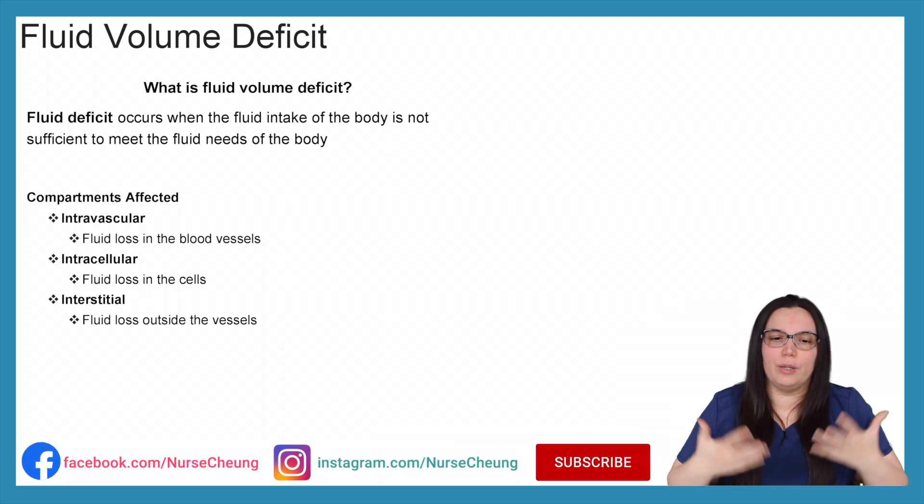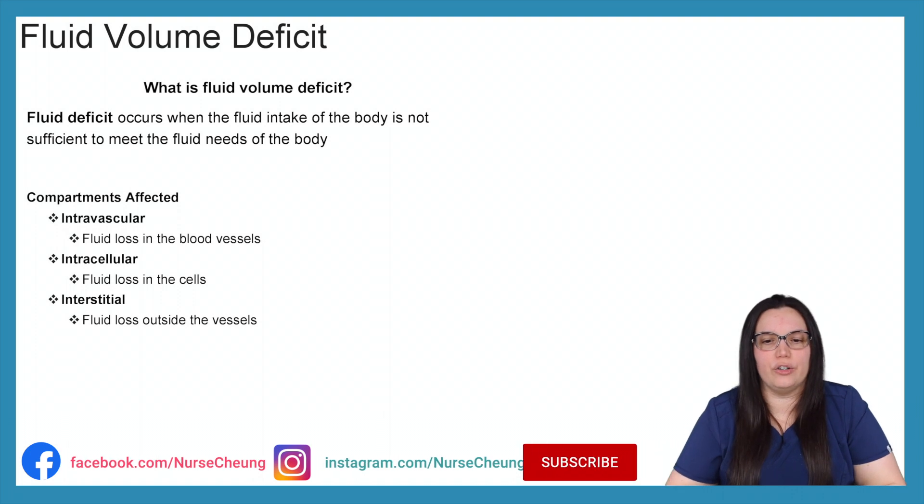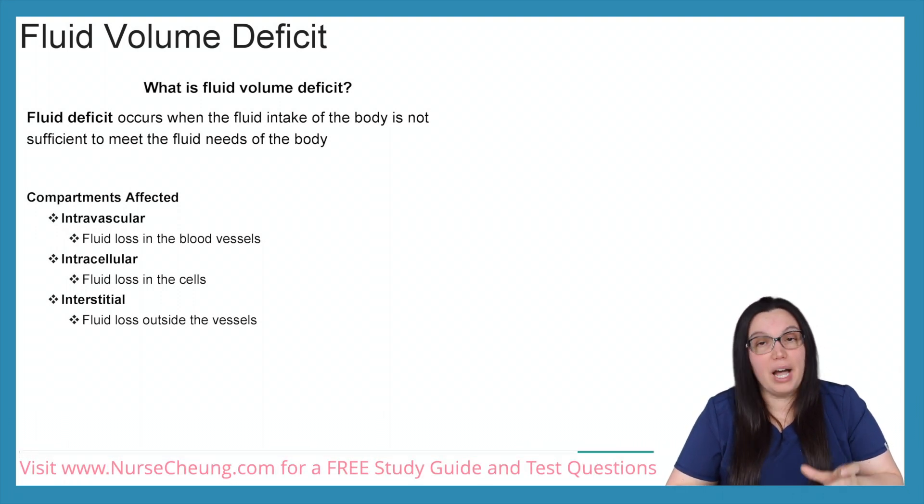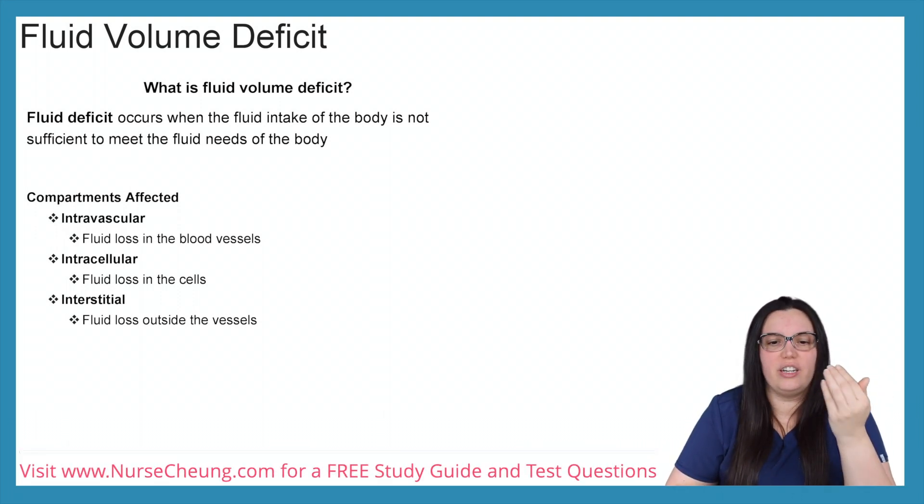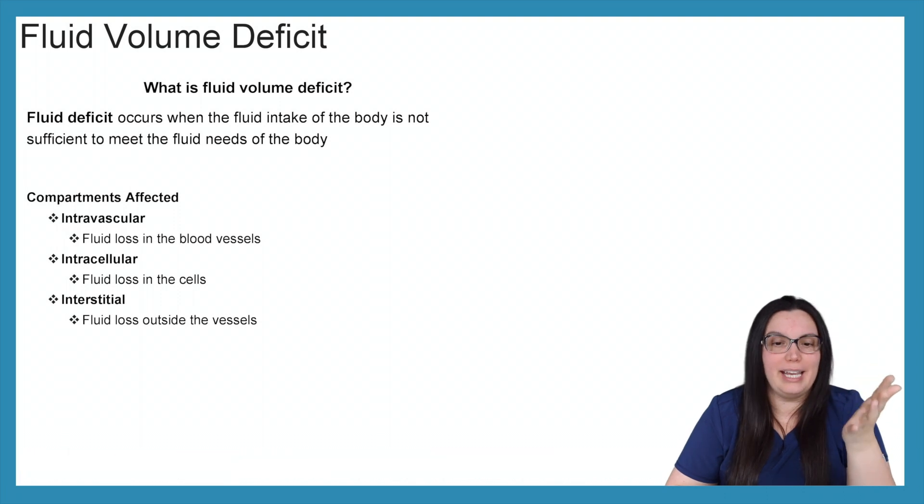So what is fluid volume deficit? Well, fluid deficit occurs when the fluid intake of the body is not sufficient enough to meet the body's fluid needs. So compartments that are usually affected by fluid deficits would be your intravascular space, you have a fluid loss in your blood vessels. Your intracellular space, you have a fluid loss in your cells. And your interstitial space where you have fluid loss outside of your vessels.